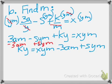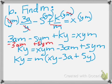And then, the next step is we need to pull m out of the right side. So, we pull m out of the right side, we get xy minus 3a plus sy.